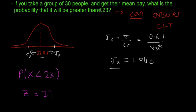z equals 23 minus 22.04, which is the mean, divided by the standard deviation, which is 1.943. So our z-value is 0.489.